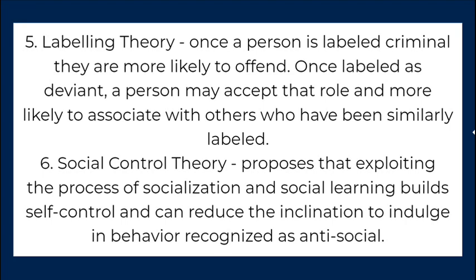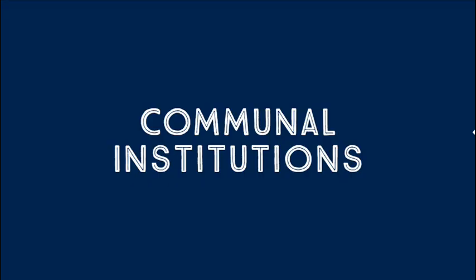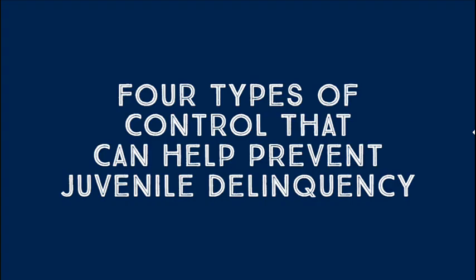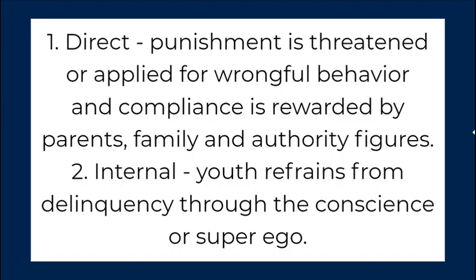Communal institutions: 1. Family, 2. School, 3. Church, 4. Social groups. Four types of control that can help prevent juvenile delinquency: 1. Direct — punishment is threatened or applied for wrongful behavior and compliance is rewarded by parents, family, and authority figures.